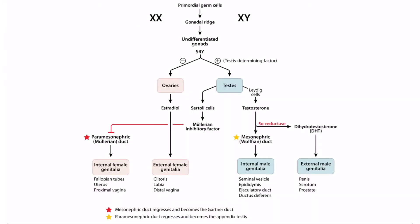Recall that Sertoli cells normally secrete MIF, which inhibits the Müllerian duct from forming. Therefore, if Sertoli cells are absent, this would cause decreased MIF. Alternatively, MIF can be defective or lacking, or the gene for MIF could be defective. Any of these scenarios would result in decreased MIF, which would result in persistence of the Müllerian duct.